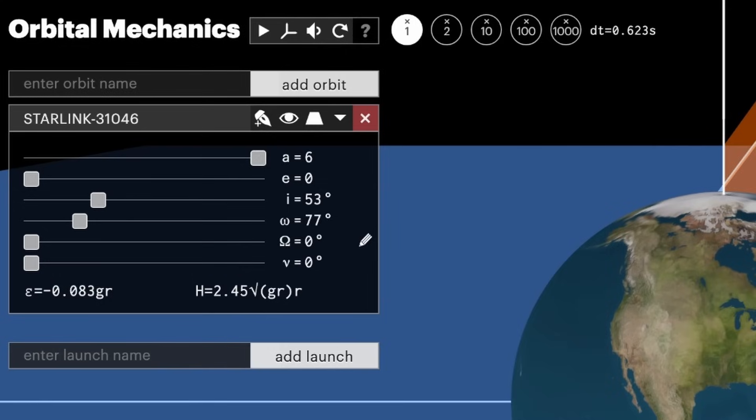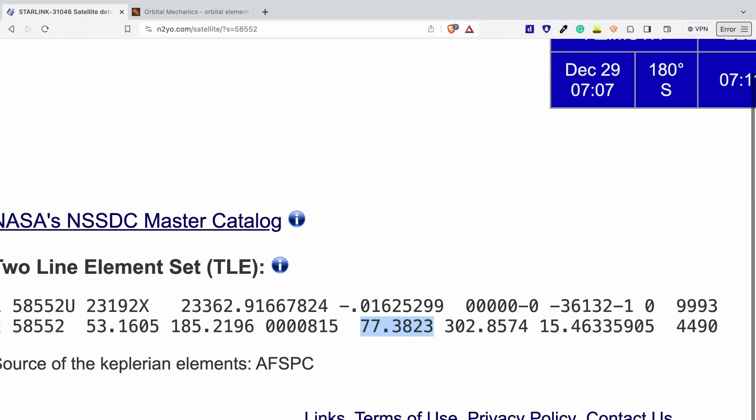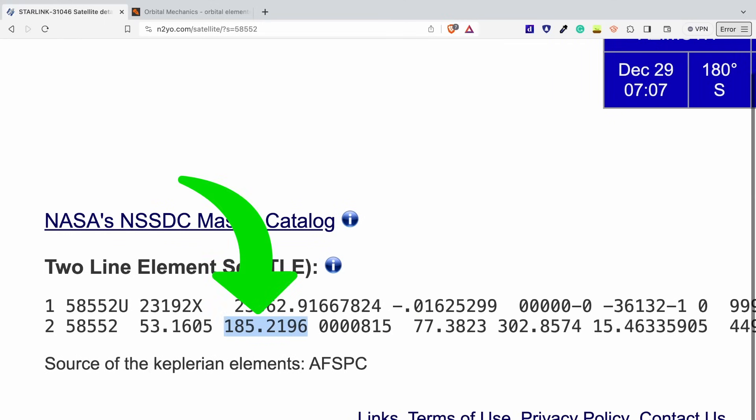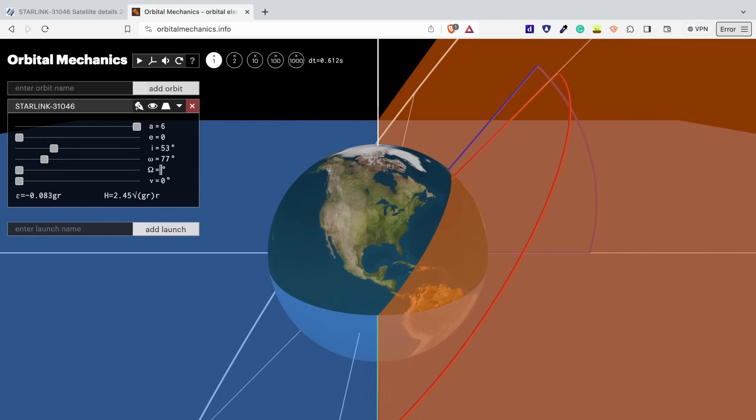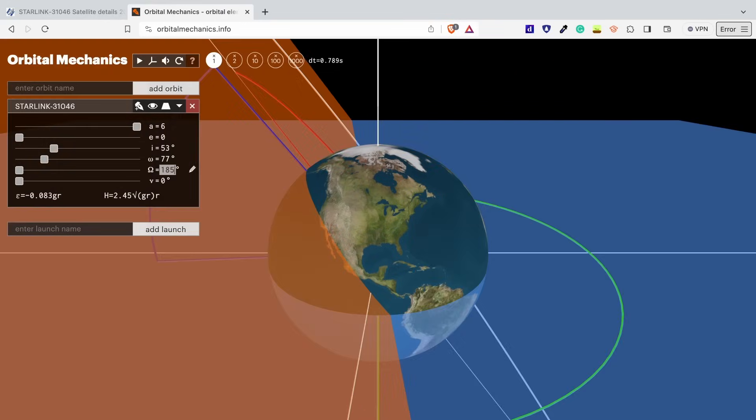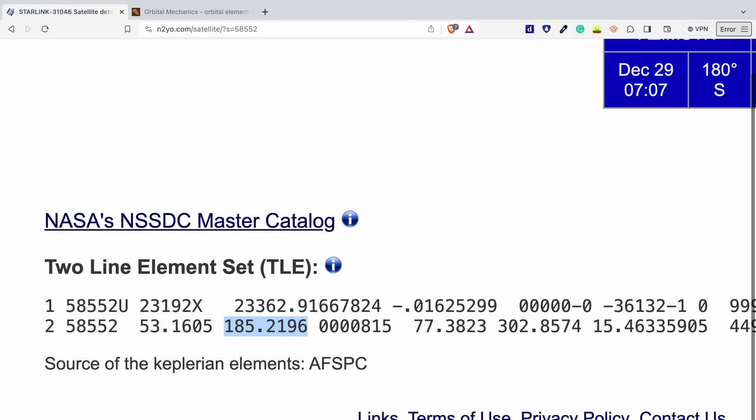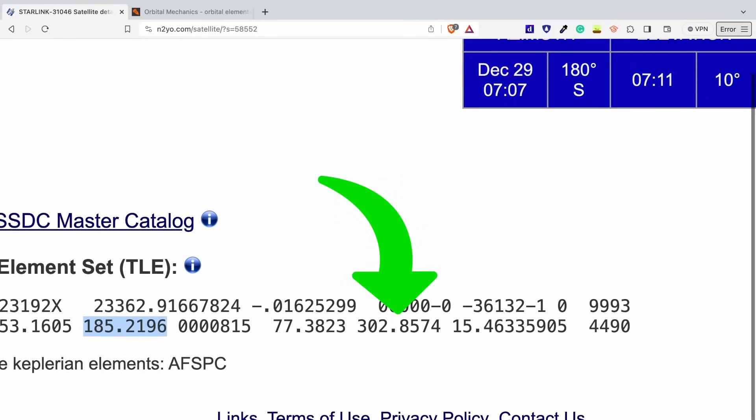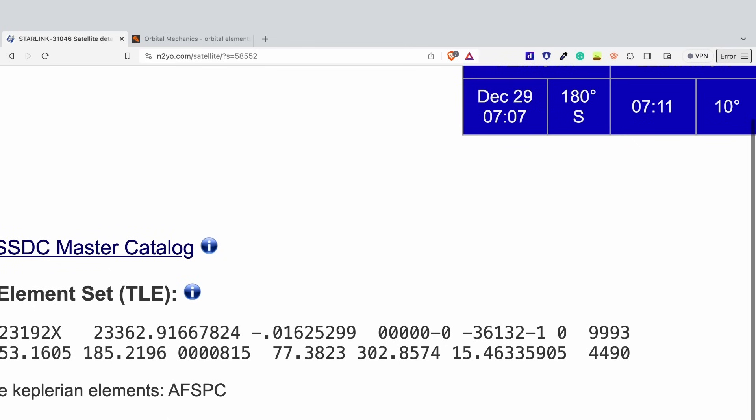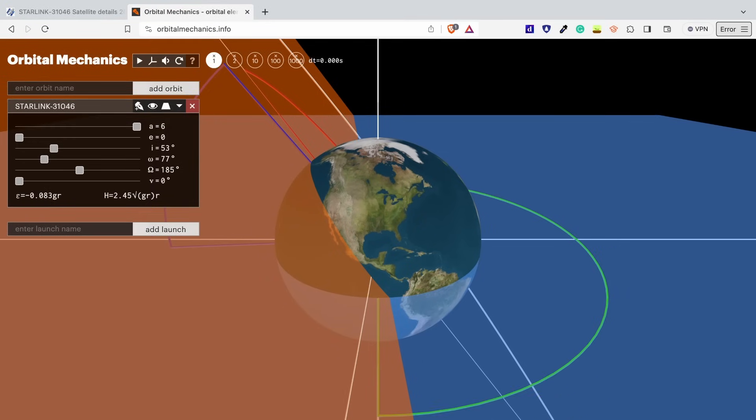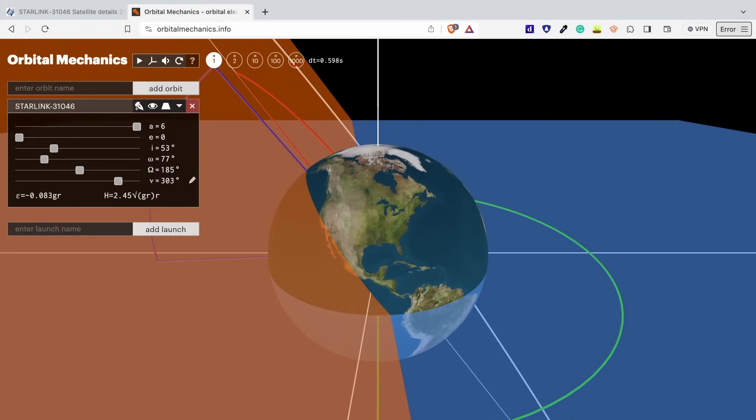This horseshoe icon stands for the right ascension of the ascending node. This is shown here, so I can round that to 185, and then plug that in. And then lastly, we have this V symbol. This stands for the mean anomaly. The mean anomaly on the TLE is shown as this value, 302. I'm going to round it up to 303, and then we could plug it into our simulation. And there you have it. This is the plotted out orbital visualization of the Starlink satellite using orbitalmechanics.info.